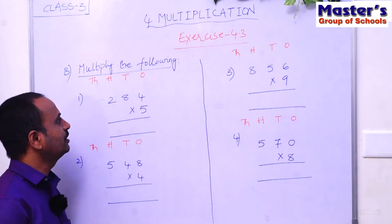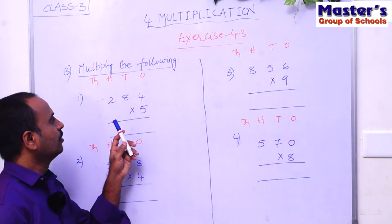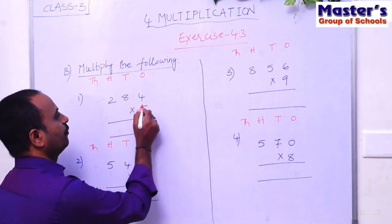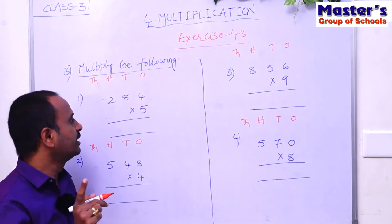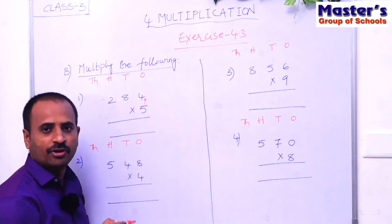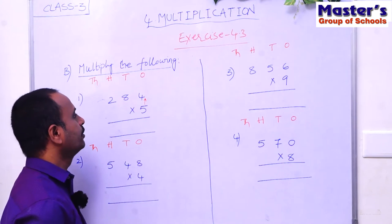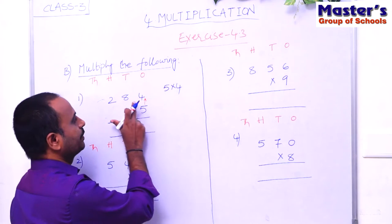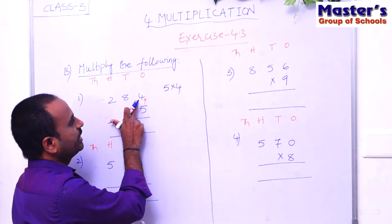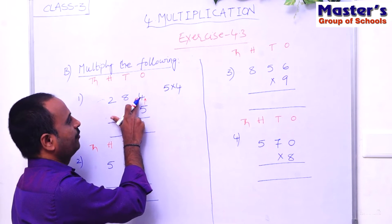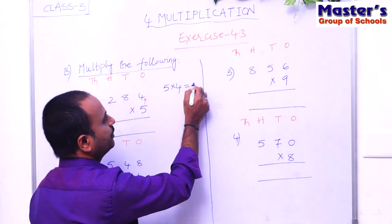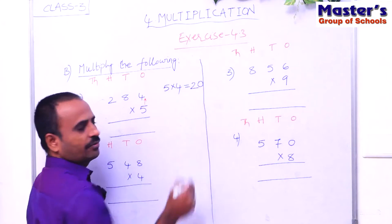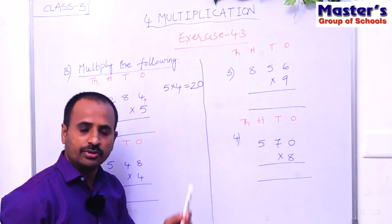Let us start multiplication from ones place. The digit in ones place is 4, so multiply 4 with 5 — that is 5 × 4. Children, 5 fours are 20, and 20 is a two-digit number. If the product is a two-digit number, we have to do carrying — that is, regrouping.